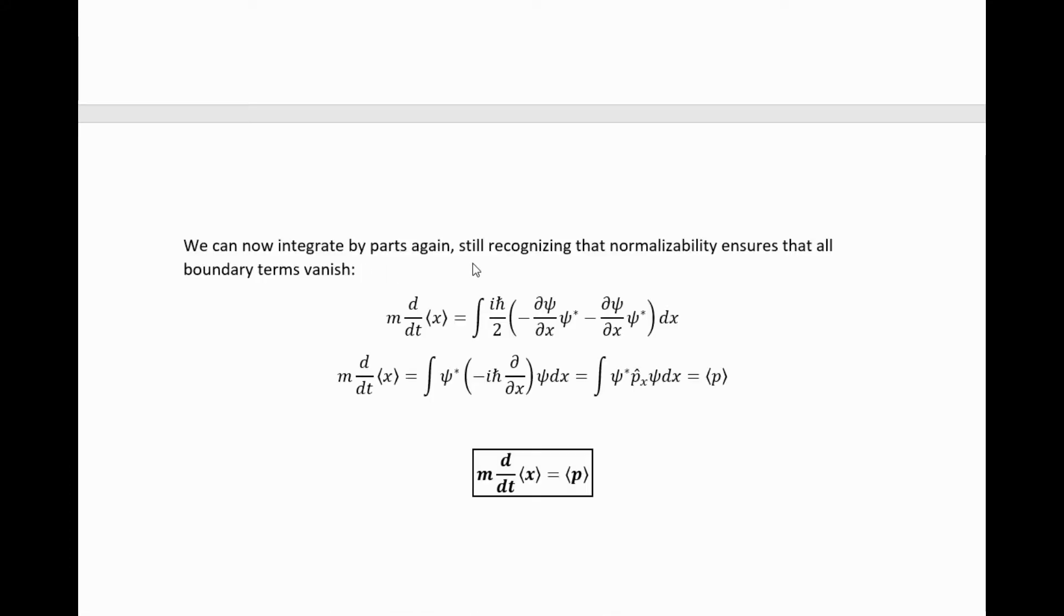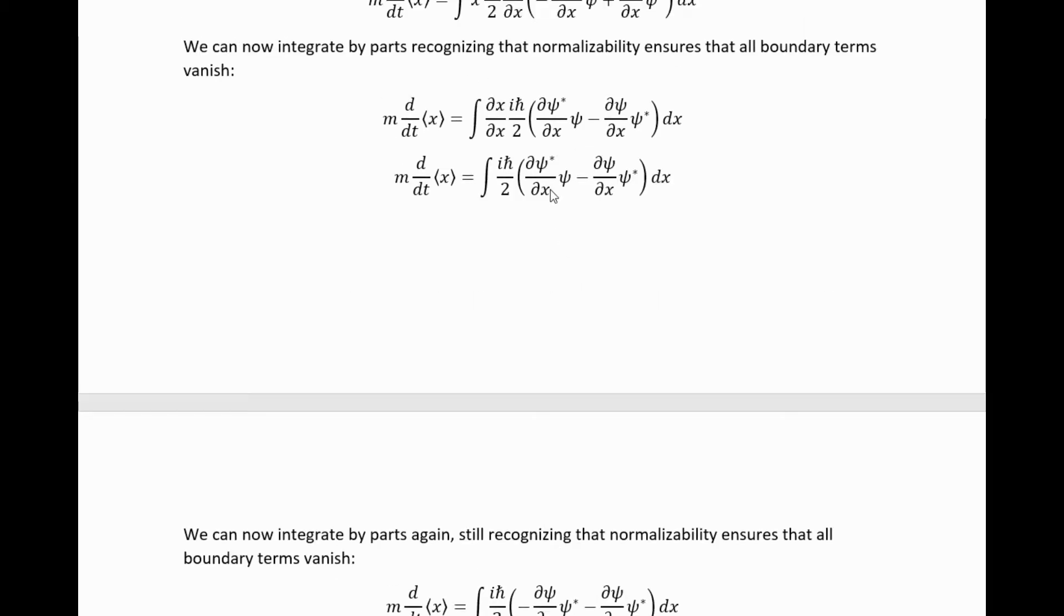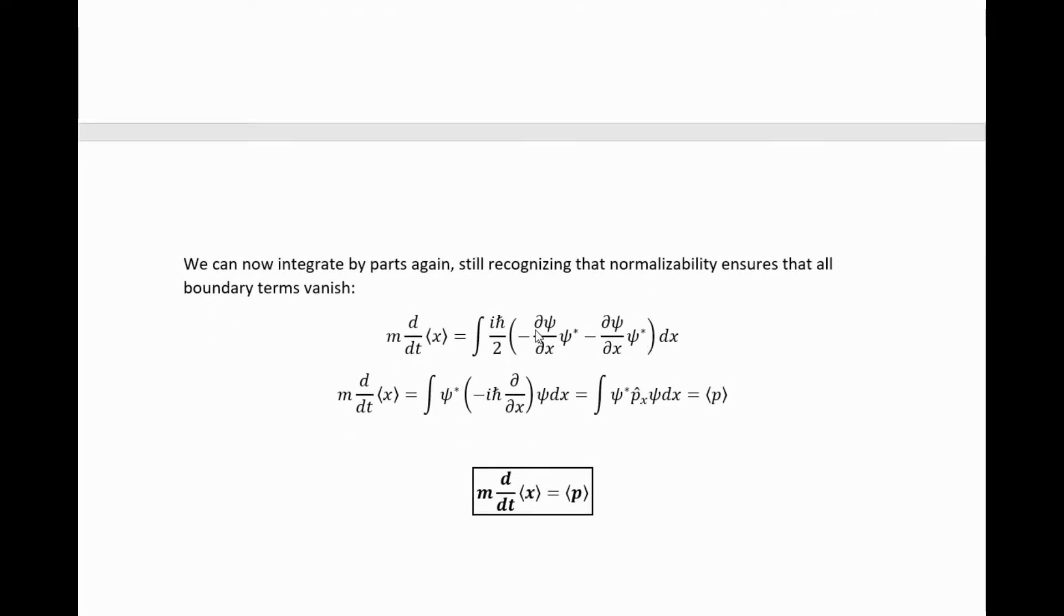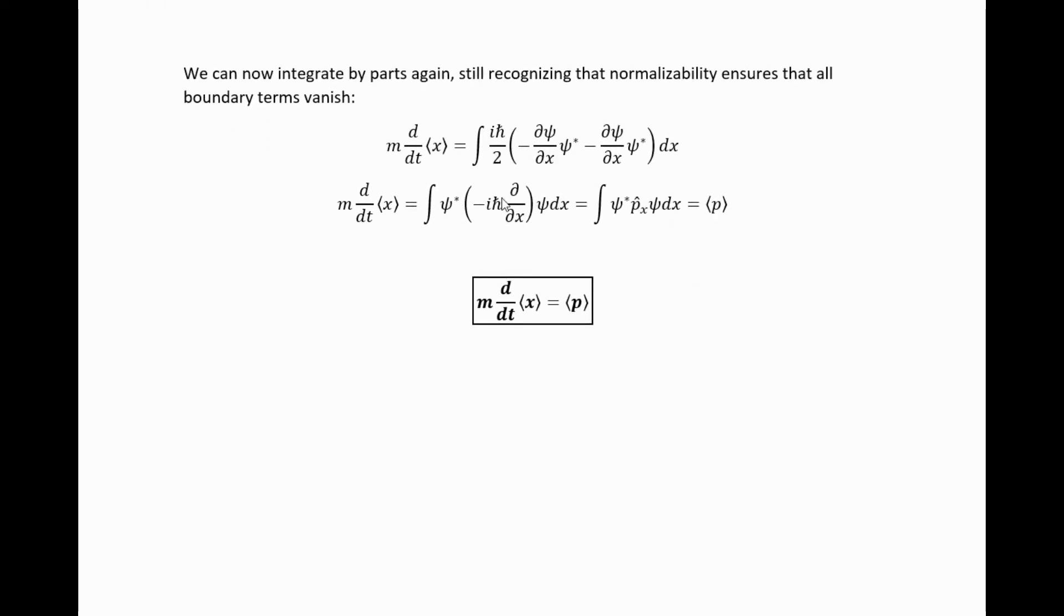We can then integrate by parts one more time to simplify this further. So if we look back at this term here, what we can do is we can move this x derivative at the cost of a minus sign on this term over to this psi instead of being on the psi star, and it makes it equal to this term, including the sign. Specifically, we get this, then they combine, and we cancel that half.